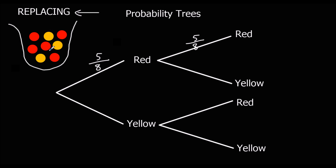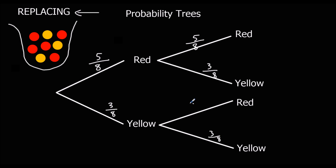And for the yellows, there's one, two, three out of eight. So it's three out of eight for the second event. But if that didn't happen — if I took a yellow the first time — that was a three out of eight chance. But then I've taken it out and put it back, so there's still three out of eight yellows and five out of eight reds. So I've replaced them, and this branch is the same as the other. You'll notice that these two probabilities add up to a whole — eight out of eight, eight out of eight, and eight out of eight.